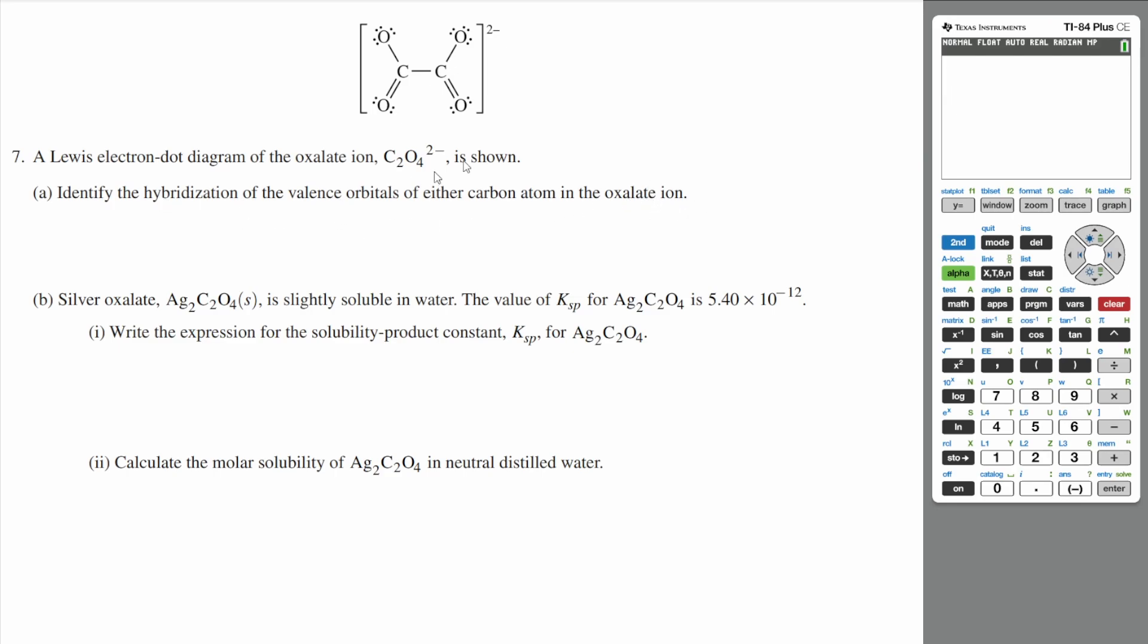In order to find the hybridization, we should find out how many bonding domains there are in this carbon. So there's one domain here, one domain here, and one domain here. Each of these bonds count as one domain each. And you might be thinking a double bond counts as two domains. No, double bonds, single bonds all count as one domain.